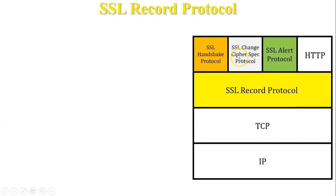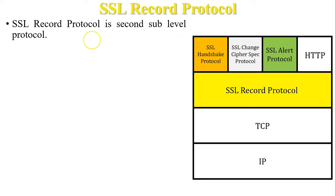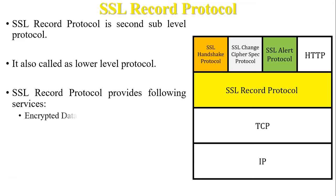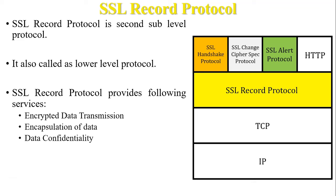The next protocol is SSL Record Protocol, the lower-level protocol in SSL architecture. SSL Record Protocol provides the following services: encrypted data transmission — it is responsible for encrypted data transmission during communication. Data encapsulation — a lower layer protocol receives data from the higher level protocol and places it into the data portion of its frame. Data confidentiality — achieved using the secret key defined by the handshake protocol. Data integrity — a Message Authentication Code is added with data to achieve data integrity.